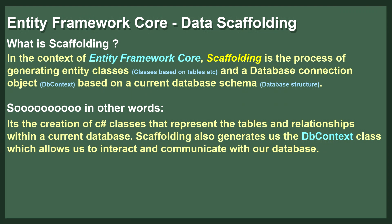Many of you might not have even heard the term scaffolding. There are other terms for it — for example, database scaffolding, data scaffolding, entity scaffolding, etc. But in the context of Entity Framework and Entity Framework Core, scaffolding is the process of generating entity classes — your C# classes — based on a current database structure or schema. In other words, it's the creation of C# classes that represent all the tables and relationships within your database, along with generating your DbContext class. The DbContext class being the class within the Entity Framework structure that allows you to interact and communicate with your database.